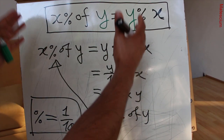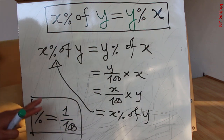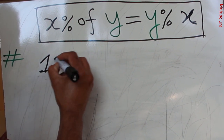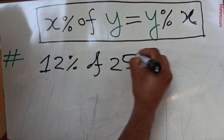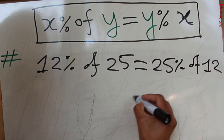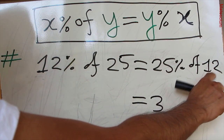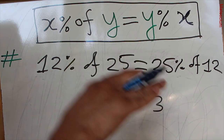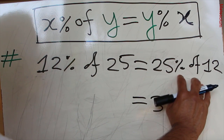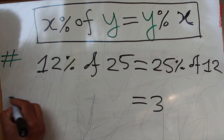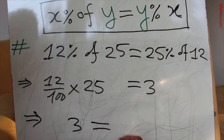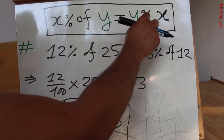This is true mathematics — there are no tricks. Let me show you through a real example. Consider 12 percent of 25, which equals 25 percent of 12. Twenty-five percent of 12 means dividing 12 into 4 equal parts of 3 each, so one part is 3. Therefore 25 percent of 12 is 3. And on the left-hand side, 12 times 25 over 100 also equals 3, confirming x percent of y equals y percent of x.